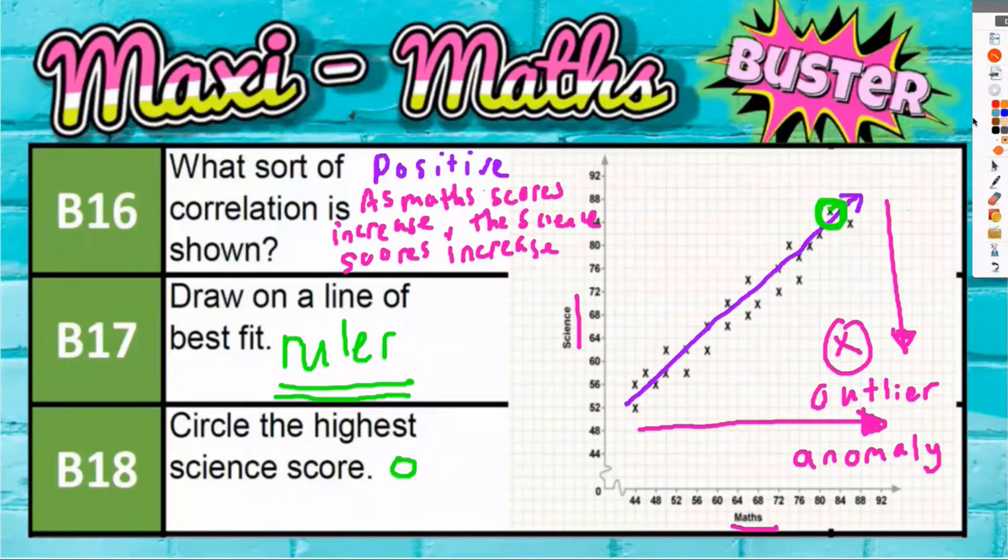And just for the sake of completeness, although it doesn't ask us to do this, we'll also circle the highest math score. So highest maths will circle in a light blue circle. Now maths is along the bottom, so you would need the furthest circle furthest onwards horizontally towards the right, and that would actually be this one. So that's further along than the green one. Furthest up is the green circle, so that's the highest science score. Furthest along is the blue circle, so that's the highest math score.